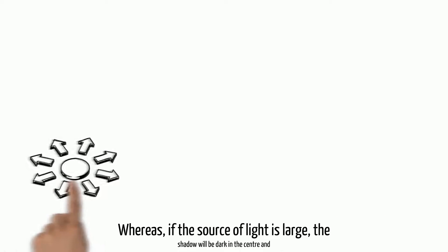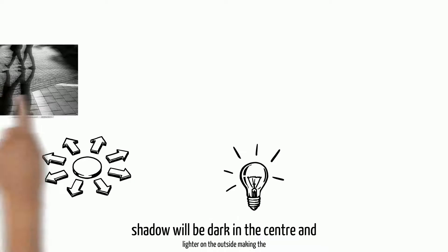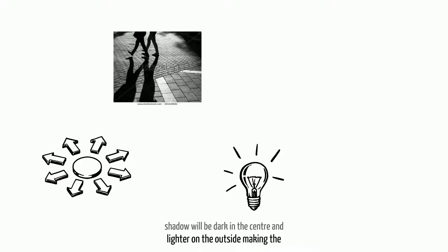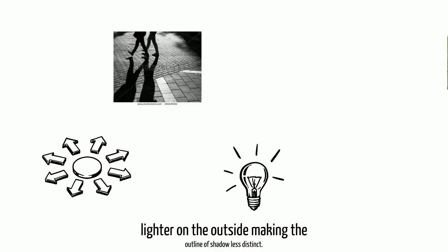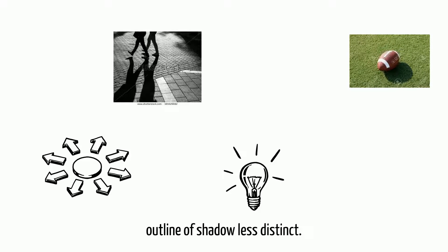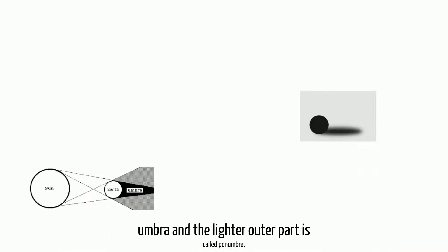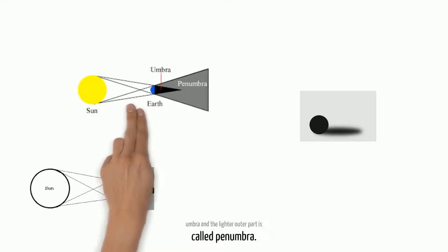Whereas, if the source of light is large, the shadow will be dark in the center and lighter on the outside, making the outline of shadow less distinct. The dark inner part of the shadow is called umbra and the lighter outer part is called penumbra.